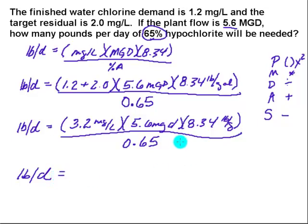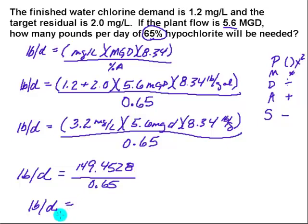And that gives me, just this top piece gives me 149.4528 bunch of decimals in there. And that's divided by this piece on the bottom, 0.65. So my pounds per day becomes 229.9 or about 230 pounds per day of chlorine is what I need to properly disinfect this system.